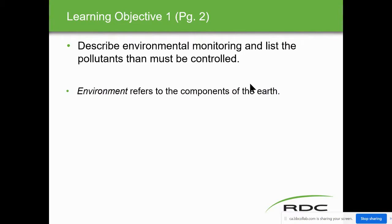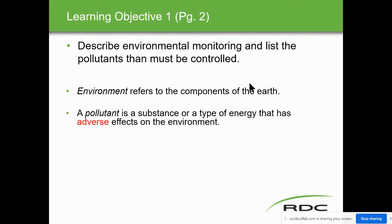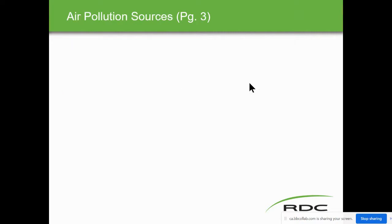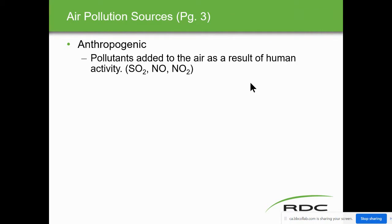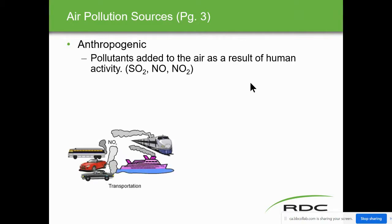Environment refers to components of the earth. A pollutant is a substance or type of energy that has adverse effects on the environment. Anthropogenic pollution is pollutants added to the air as a result of human activity — our plants, furnaces, cars — all that kind of stuff. Transportation is the largest man-made source of NOx, which is a combination of nitrous oxide and nitrogen dioxide. Whenever you hear NOx, it's nitrogen dioxide or nitrogen oxide.